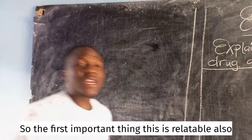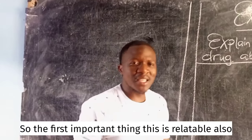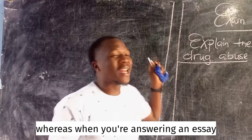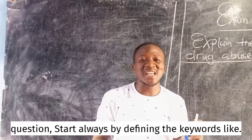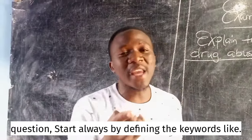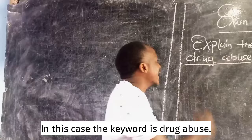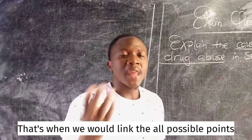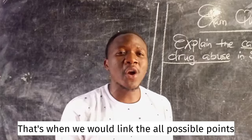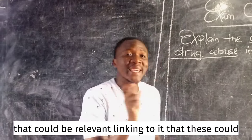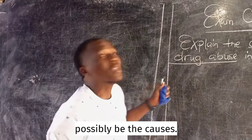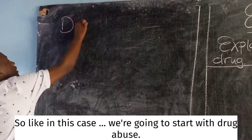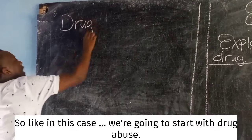The first important thing — and this is relatable also to other subjects — is that when you are answering an essay question, always start by defining the key word. In this case, the key word is drug abuse. That's when we link all possible points that could be relevant, linking to it the possible causes.